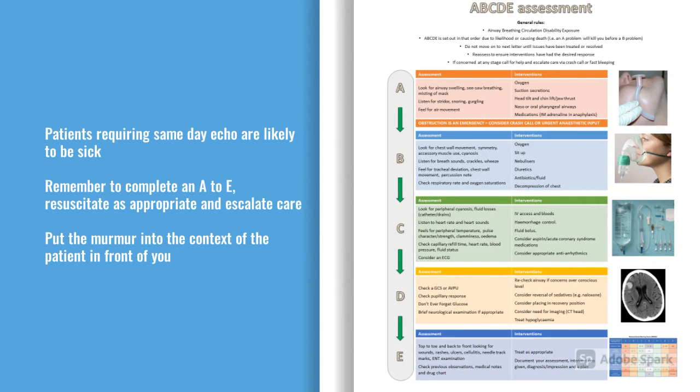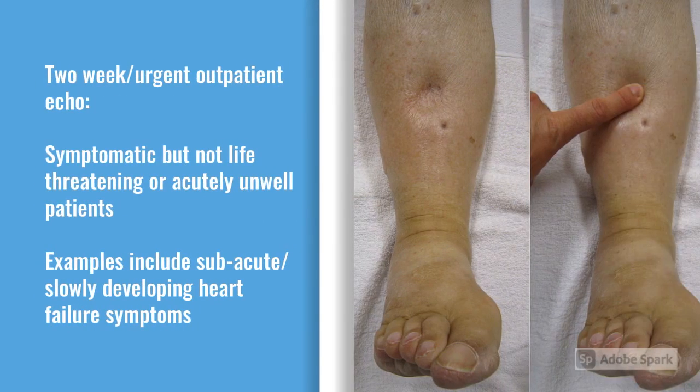These same-day patients will often have deranged observations and bloods. They'll likely be sick patients in hospital, though sometimes they drag themselves into a GP surgery and need escalating quickly. A two-week echo would be for someone having symptoms but not immediately life-threatening — for example, someone with some heart failure symptoms, slightly puffy legs, a murmur, but who is otherwise well with acceptable oxygen levels and exercise tolerance.